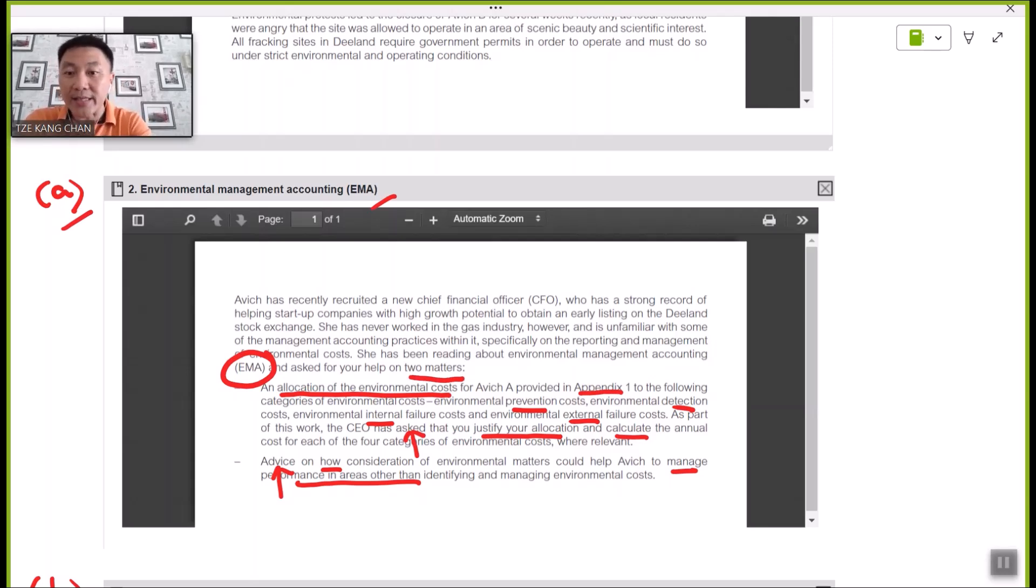As far as the EMA task in part A of the requirement is concerned, you can see there are two matters you need to address. Firstly, it is about the way to classify, the way to group the environmental costs that are given in Appendix 1 according to the following headings: prevention cost, detection or appraisal cost, internal failure, and finally external failure cost. Where have you seen and come across this kind of name before? This is clearly one of the approaches in analyzing environmental costs according to the principles of quality cost analysis as discussed earlier.